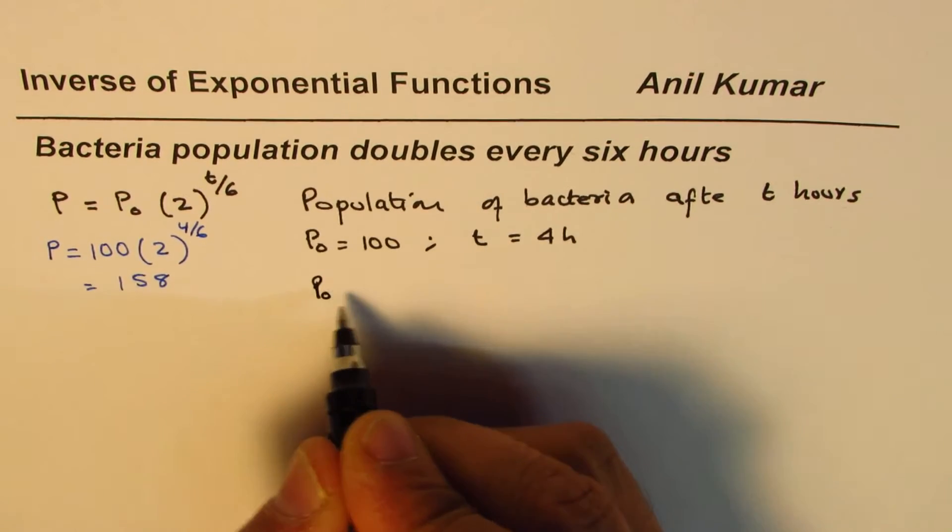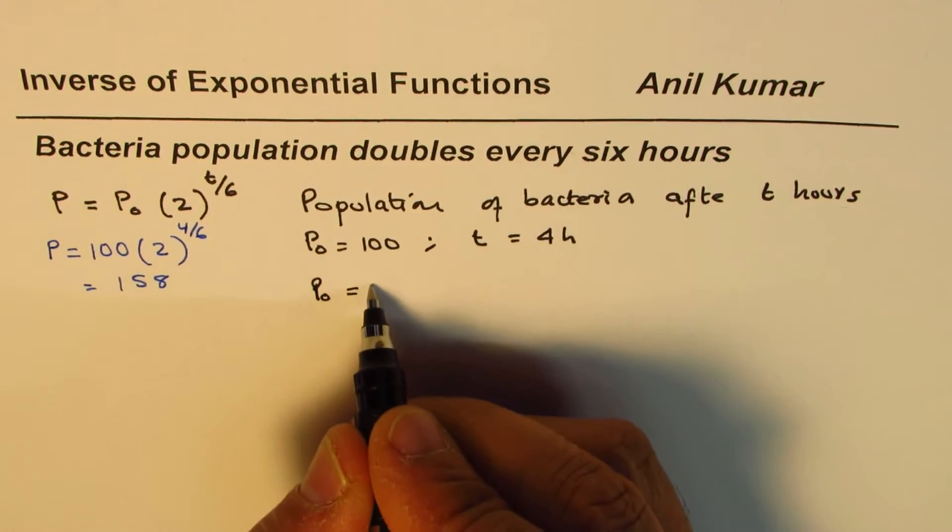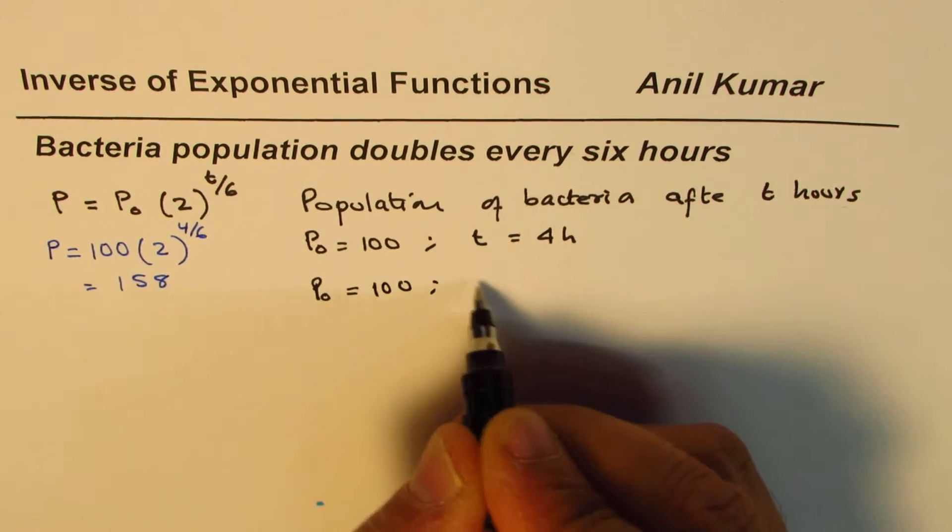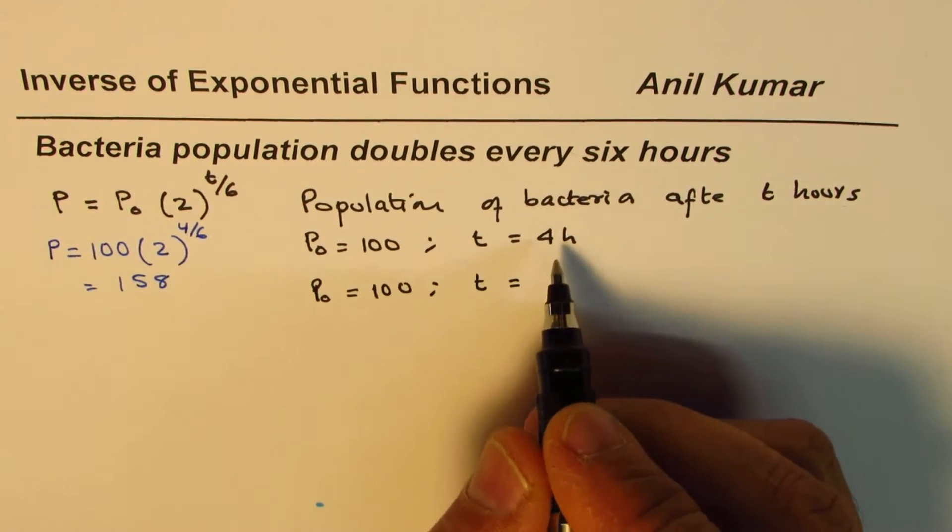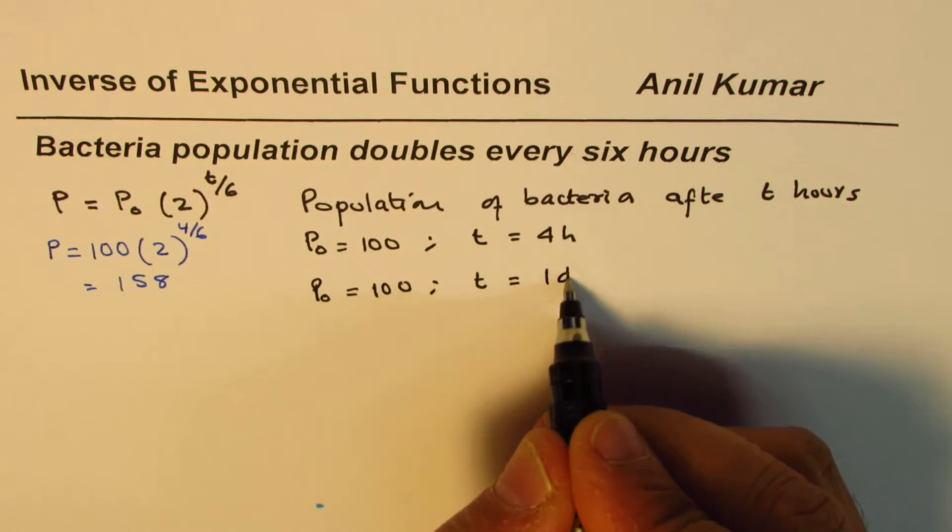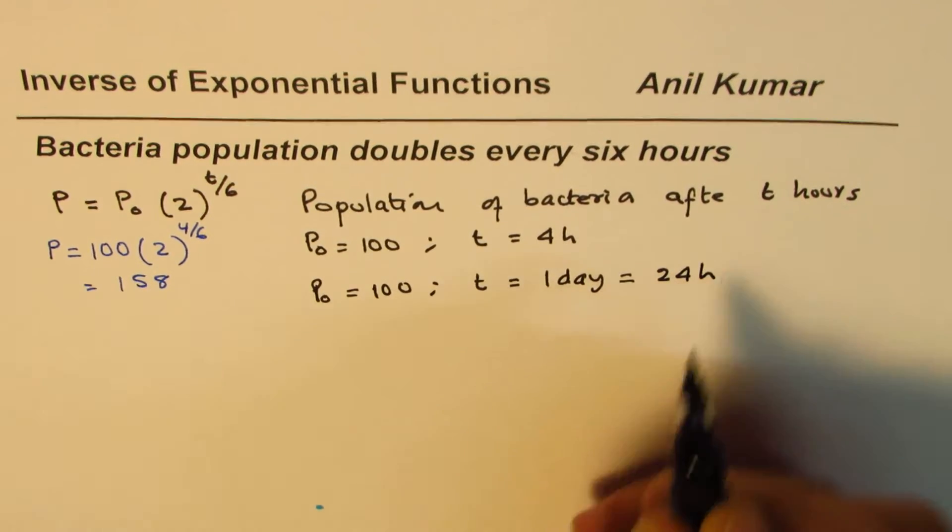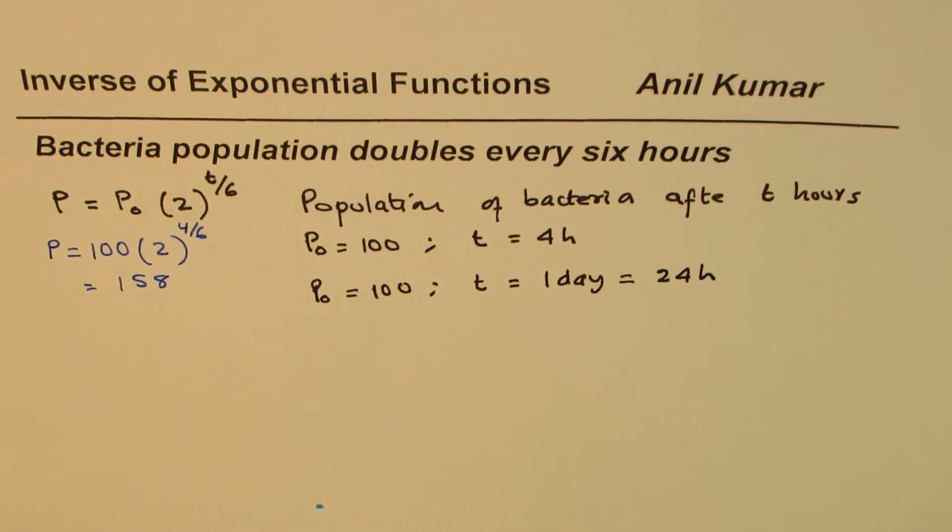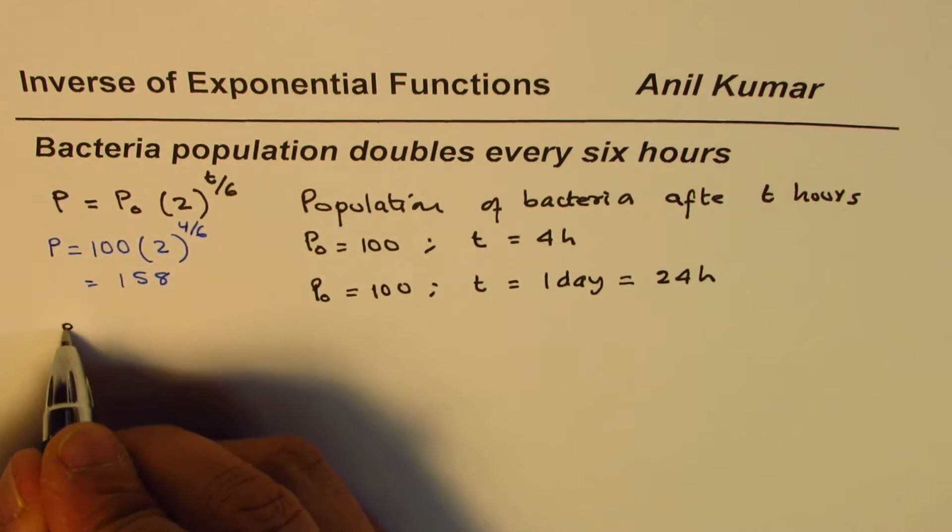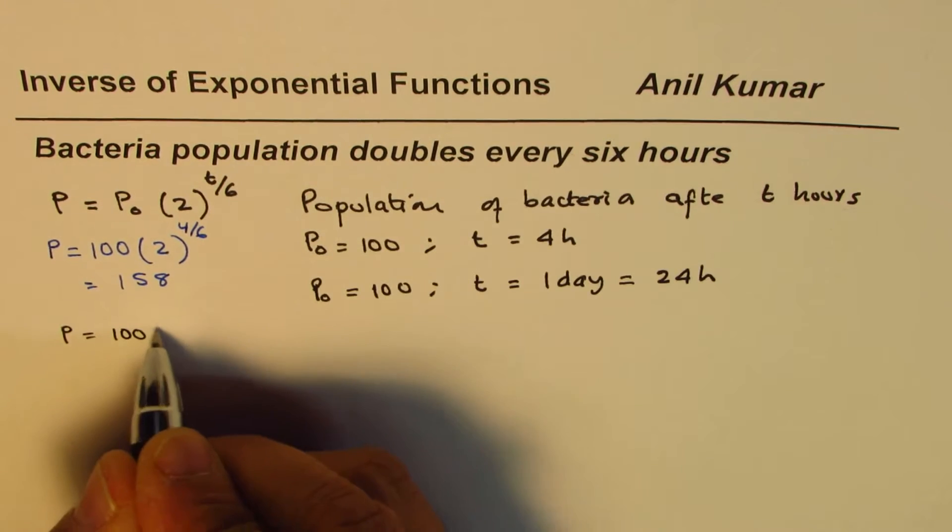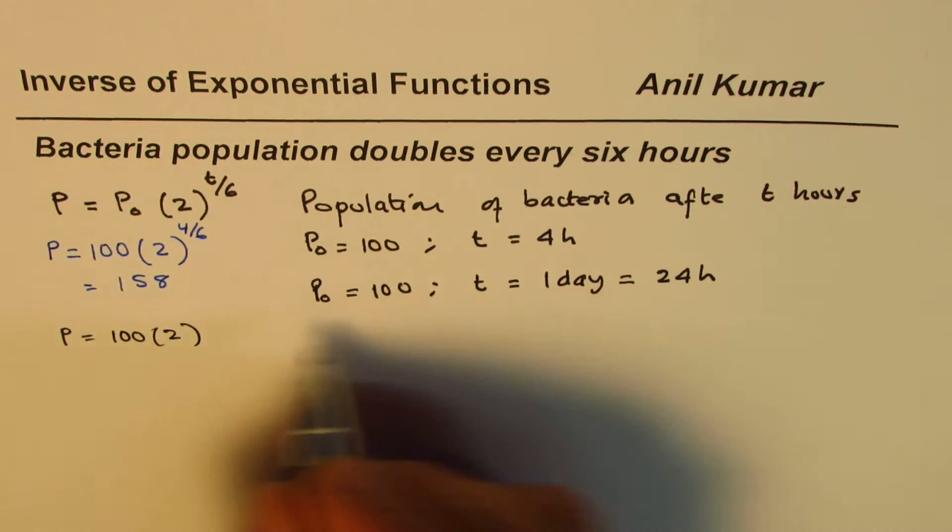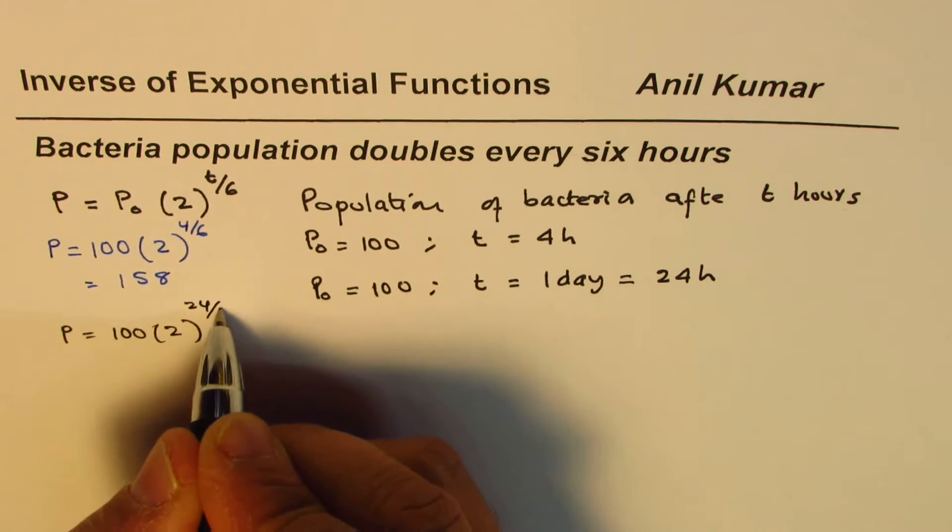Now if you really want to find the population after, let's say, one day, the population of the bacteria starts with hundred. One day will really mean that we are talking about 24 hours. In that case you could substitute the value in the given expression and calculate P as equal to hundred times 2 to the power of 24 divided by 6.